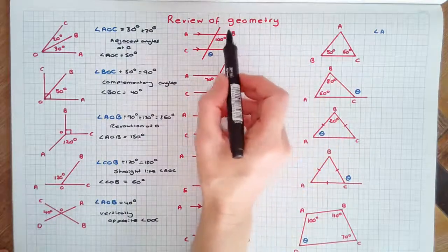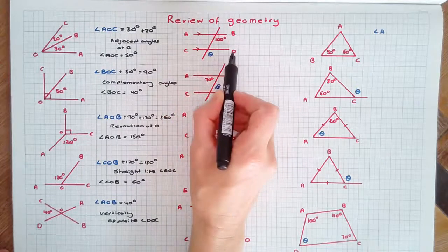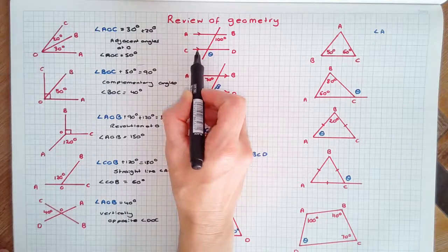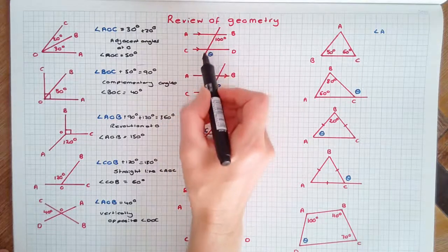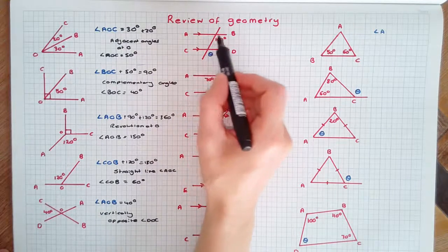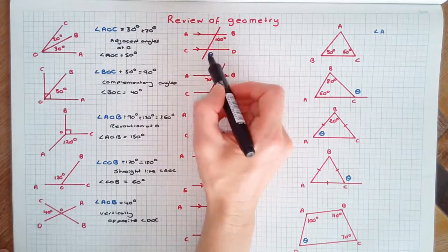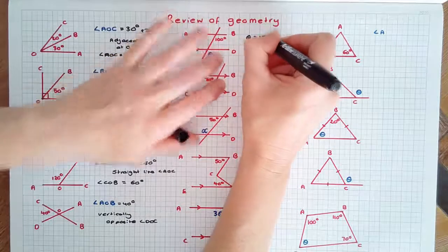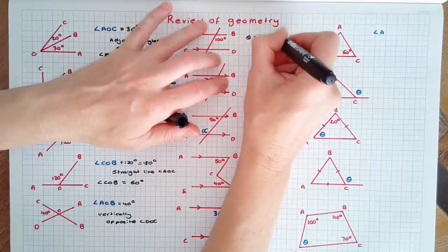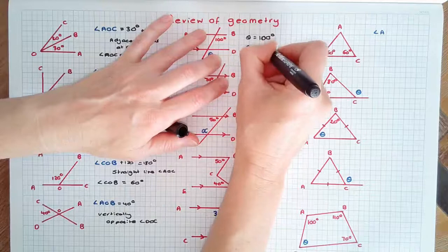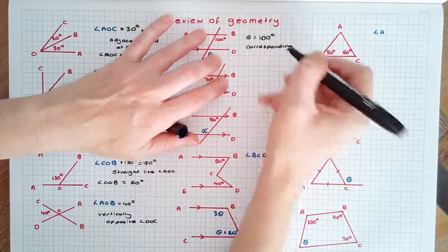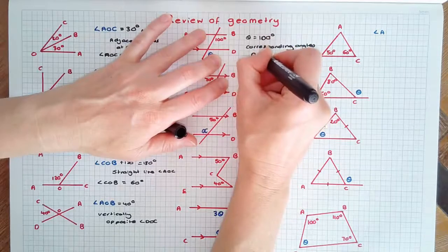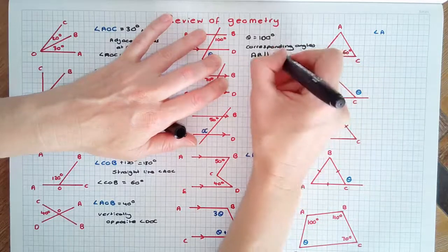Here we have two parallel lines AB and CD, marked with little arrows to indicate that they're parallel. Since a transversal crosses parallel lines, the corresponding angles are equal. Therefore theta equals 100 degrees because they're corresponding angles on the parallel lines AB parallel to CD.